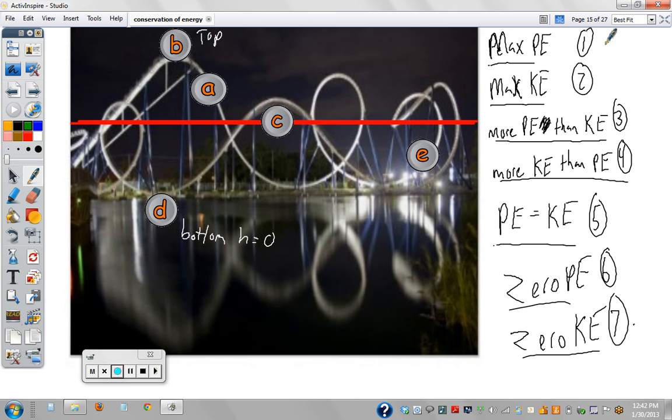Here's the answer. Max potential energy is at the top, B. Max kinetic energy is at the bottom, D, where it's going the fastest.